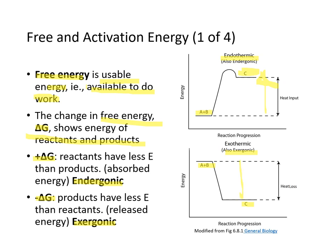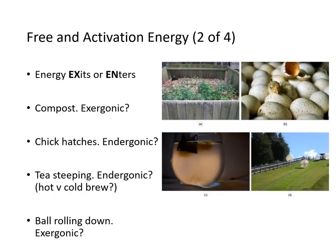In an exergonic reaction, the reactants have more energy than the products, leading to a loss of energy by the reactants. Looking at compost releasing heat — that's exergonic. A chick hatching from its egg is endergonic because it requires input of energy. Steeping tea uses hot water's energy to pull tea molecules from the leaves. A bone rolling downhill is exergonic because potential energy is released.